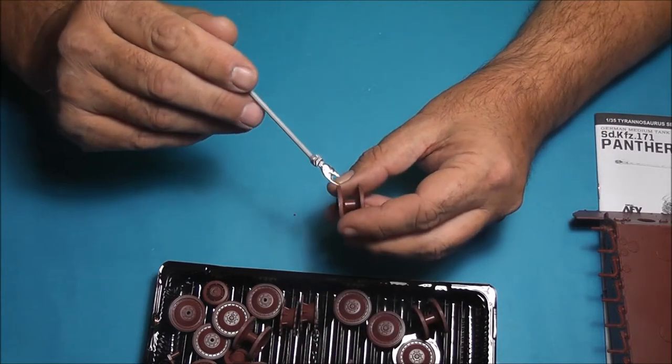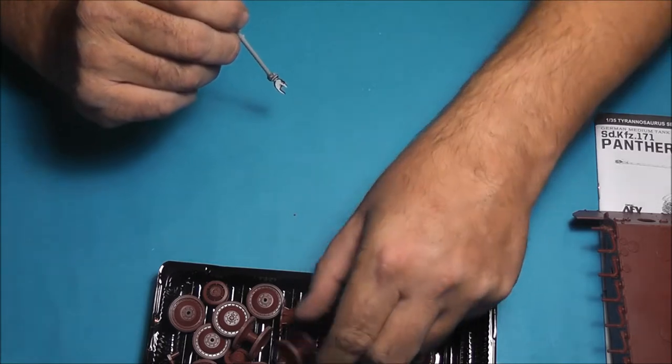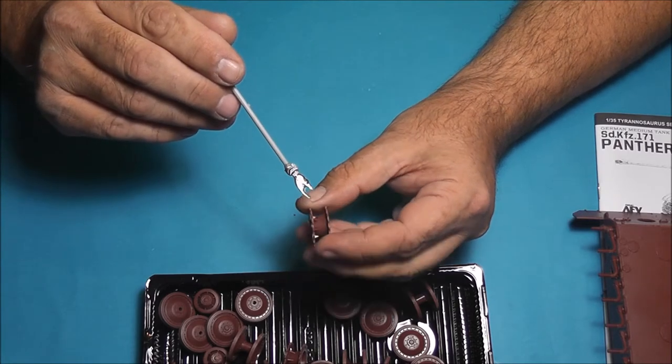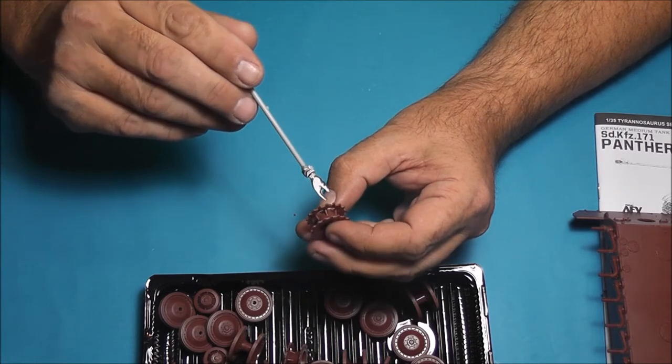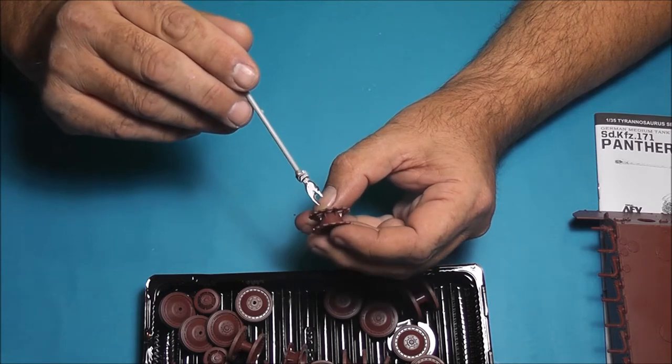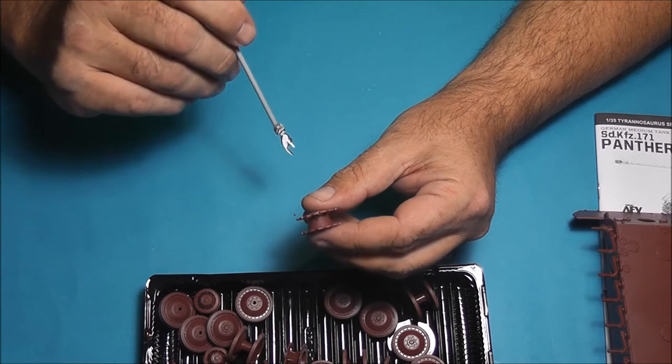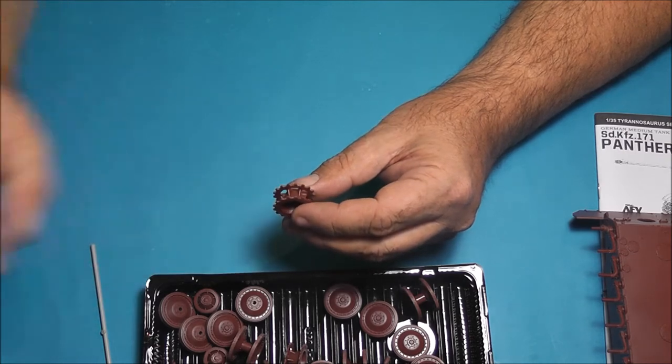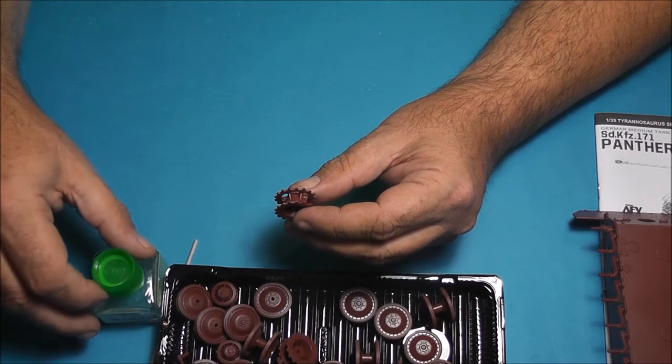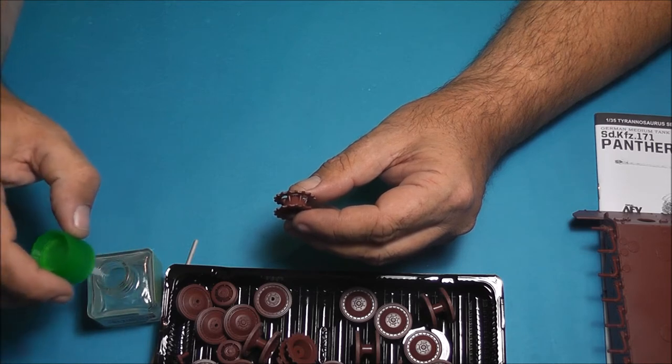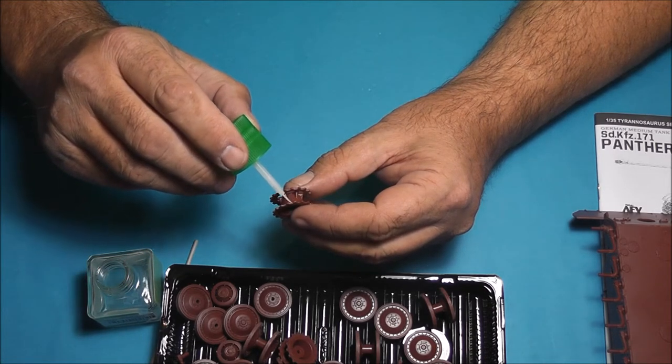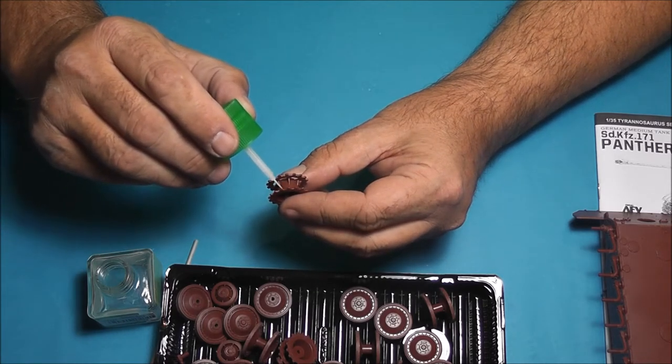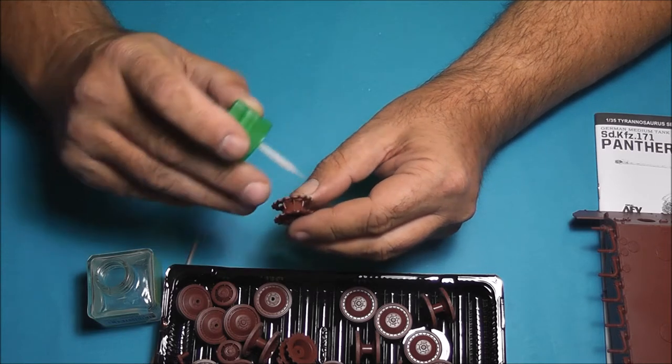But I did clean down all these road wheels because of the seam line running through it. The other part which did have a pronounced seam line running through it was the drive wheels. These all took cleaning up very, very carefully, just using a shaped bit of wet and dry.